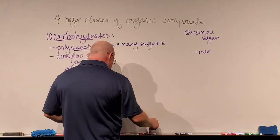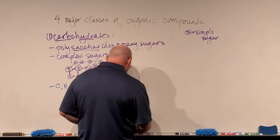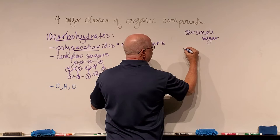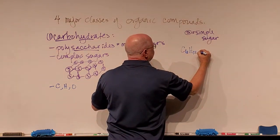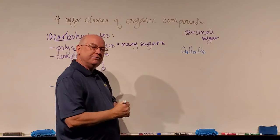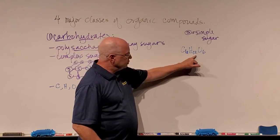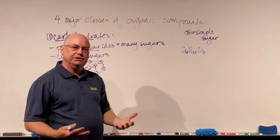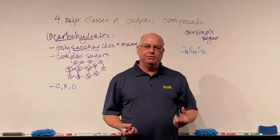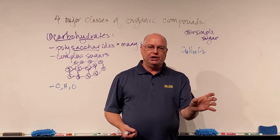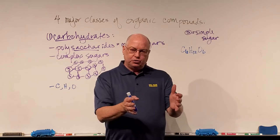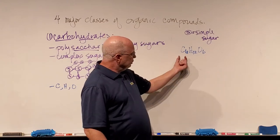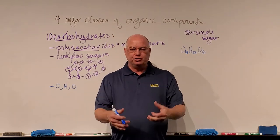When I look at a simple sugar, the simple sugars we're going to look at for now have this chemical formula: C6H12O6. In chemistry, that means I have six carbons, twelve hydrogens, and six oxygens. When I put them together in a specific fashion, I get what's called a simple sugar. A simplified example would be if I gave you six yellow Legos, twelve red Legos, and six green Legos — different Legos representing different atoms — you would assemble them into a simple sugar.